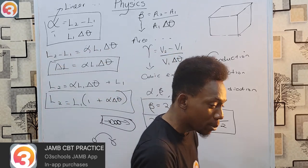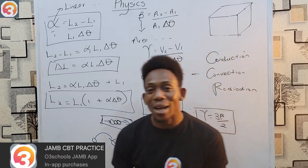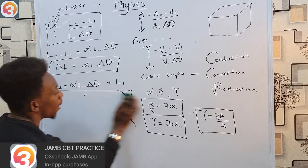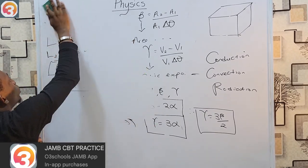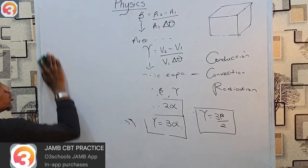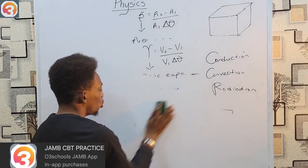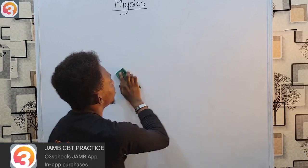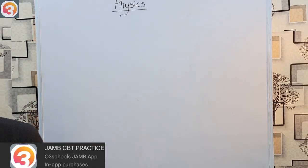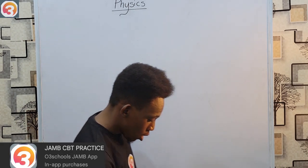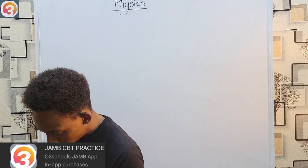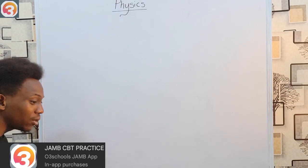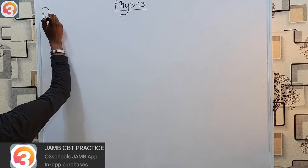Now let's open the O3Schools JAM app and get our questions. This is where having the app helps — you can simply search for questions by topic, making your reading and practice much easier. Our first question comes from the year 1998, question number 17.